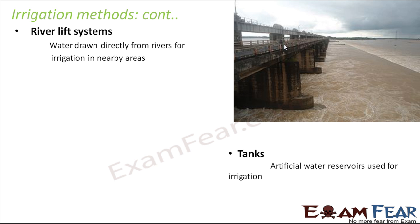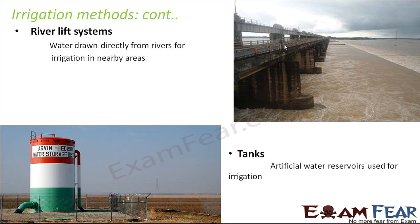Other methods could use tanks. Tanks are artificial water reservoirs used for irrigation. As you can see, a big tank contains a lot of water, and water coming out of it can be sent throughout the field using pipes.